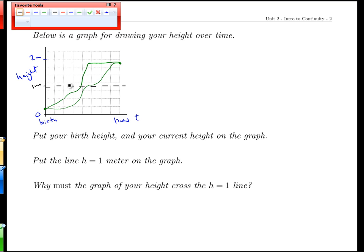And what we're relying on here is the fact that your height over time is continuous. The only way for you to have started off where you did start and ended up where you are today and not have crossed the one meter line would have been if you had grown,